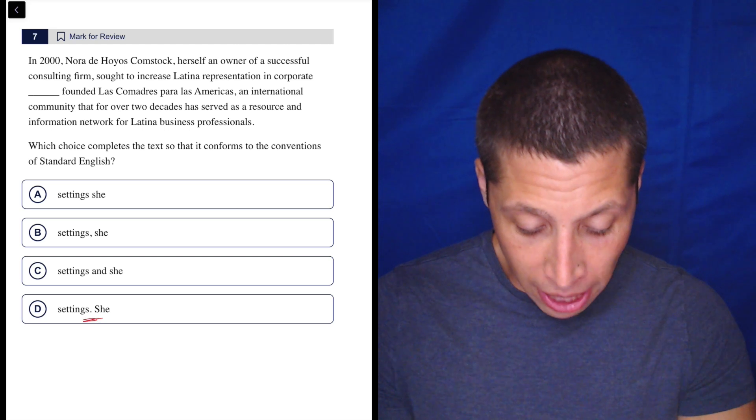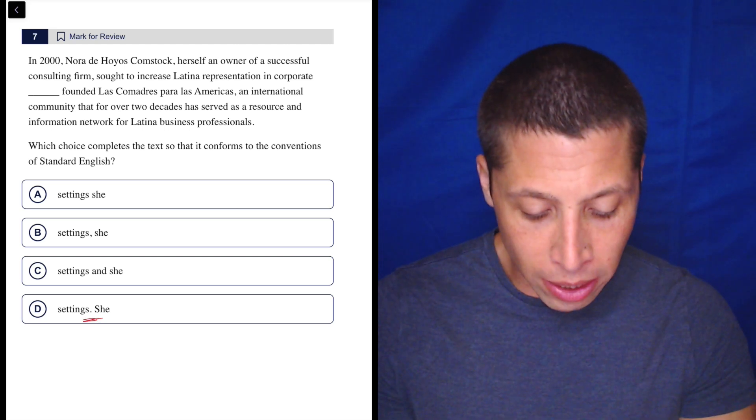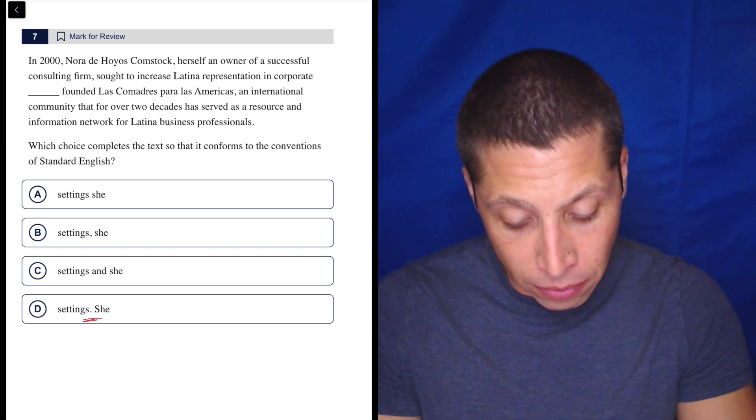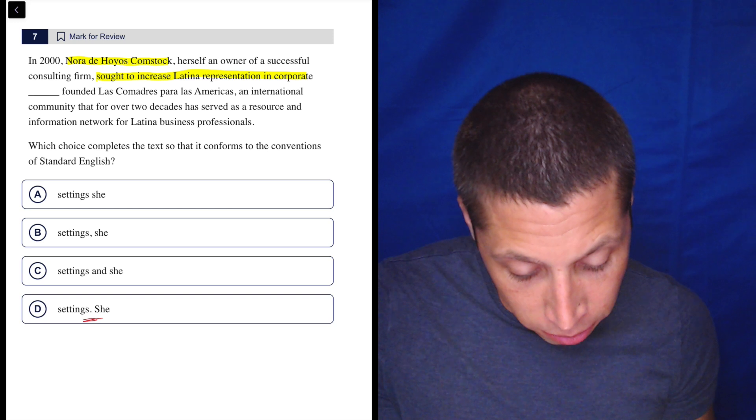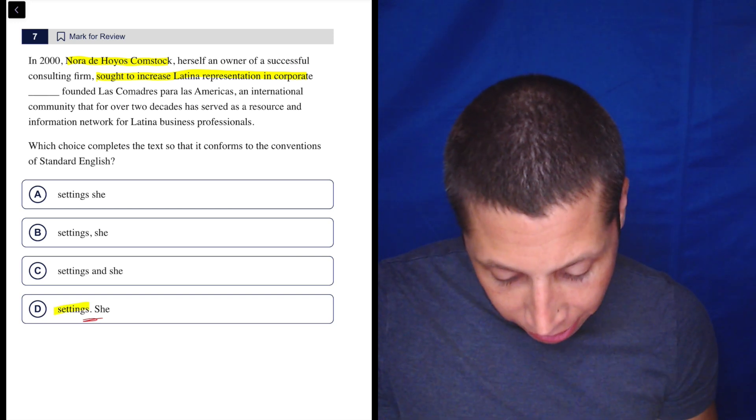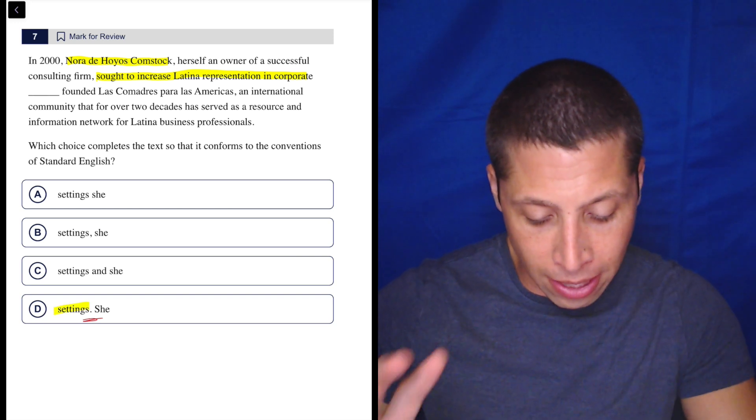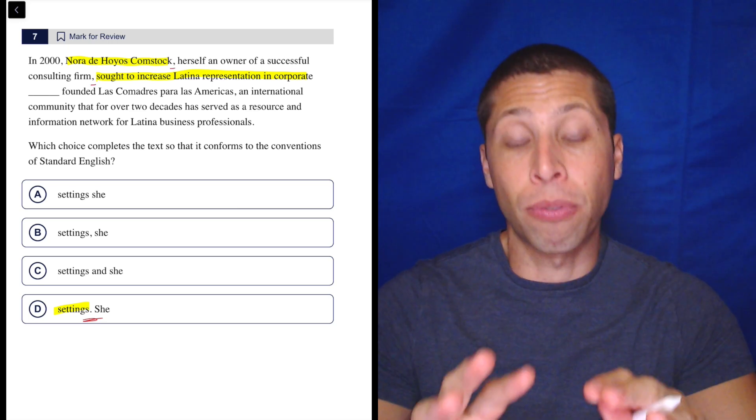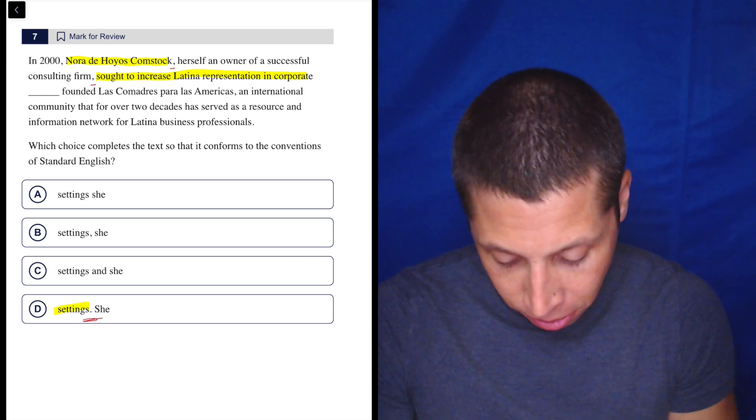In 2000, Nora De Hoyos Comstock, herself an owner of a successful consulting firm, sought to increase Latina representation in corporate settings. That sounds like a sentence. Specifically, Nora sought to increase Latina representation in corporate settings. There's definitely an insertion here in the middle of the sentence. That's what commas do. They interrupt sometimes. These two commas are giving us an extra phrase in the middle, so we can cut that out and ignore it to hear the sentence better. So that's a sentence. Check.